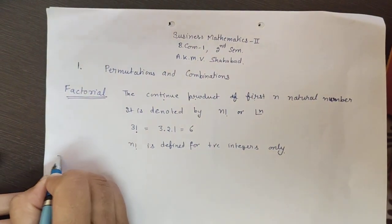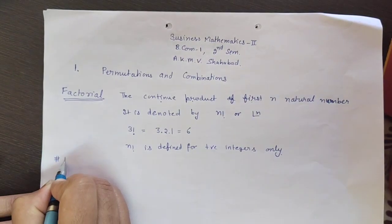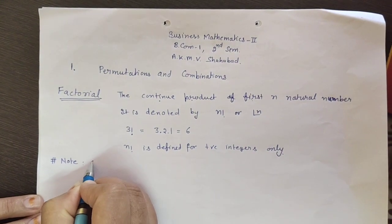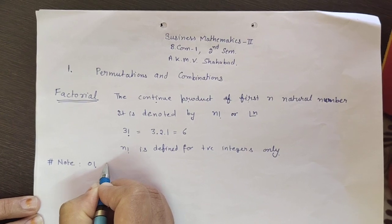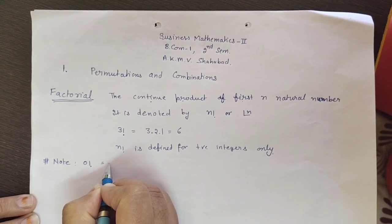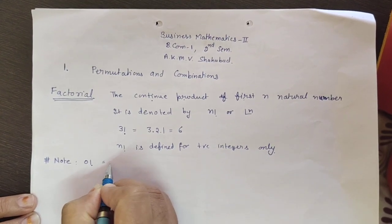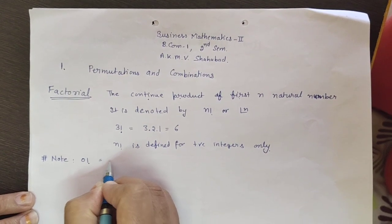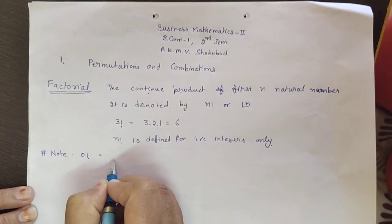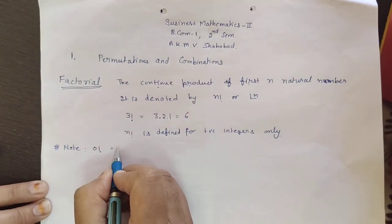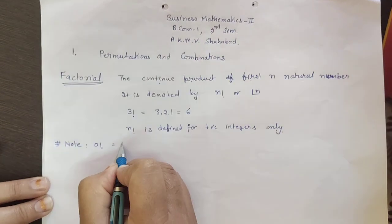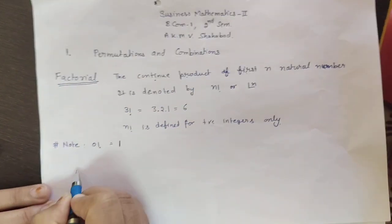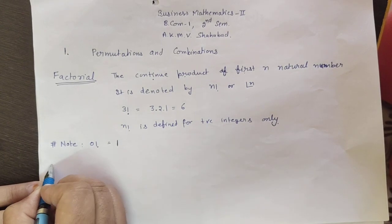There is also a need for 0 factorial. We cannot say it is the continued product of integers from 1 to 0, so we define 0 factorial as 1.